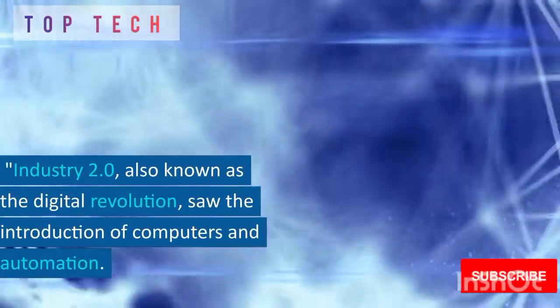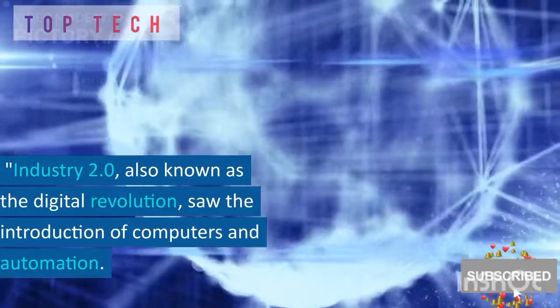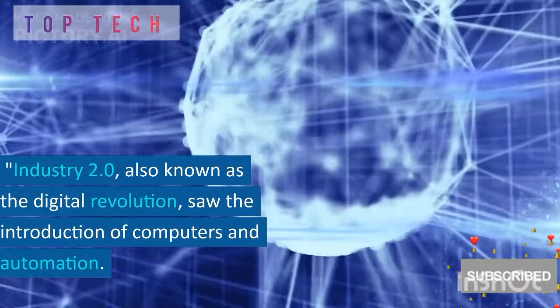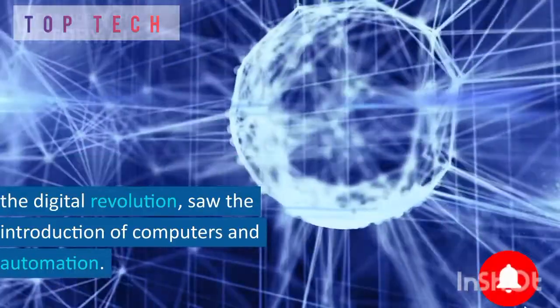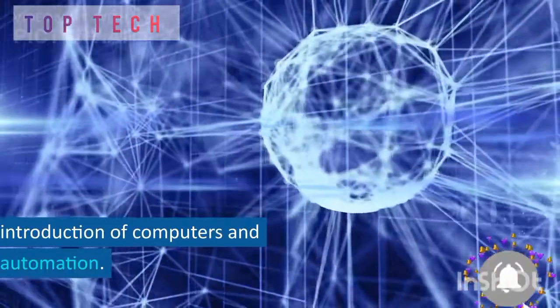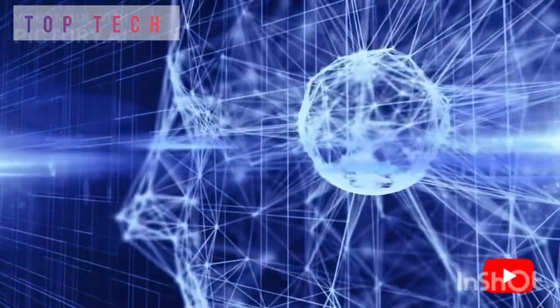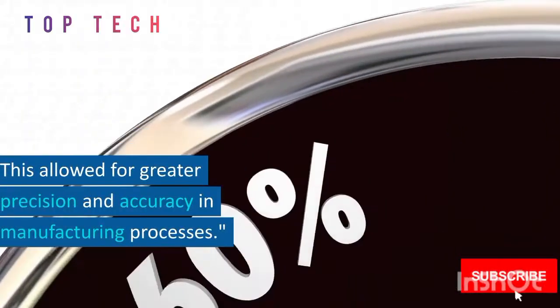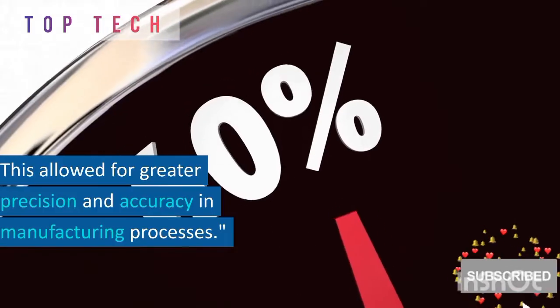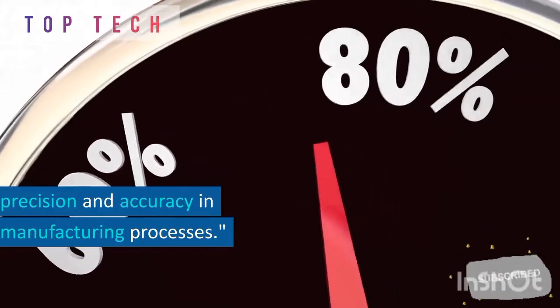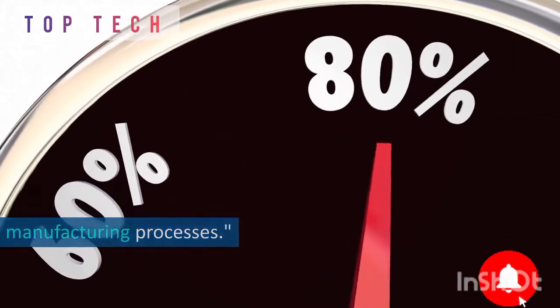Industry 2.0, also known as the digital revolution, saw the introduction of computers and automation. This allowed for greater precision and accuracy in manufacturing processes.